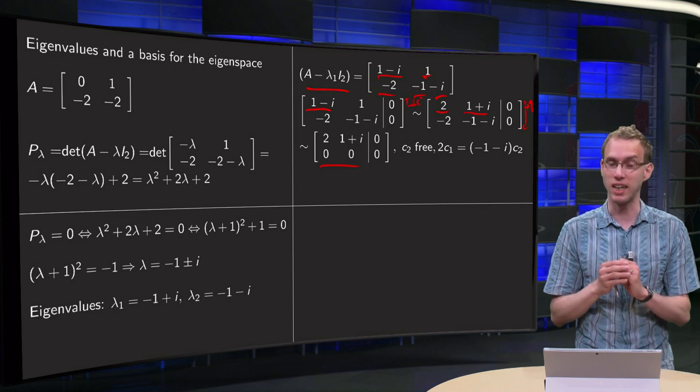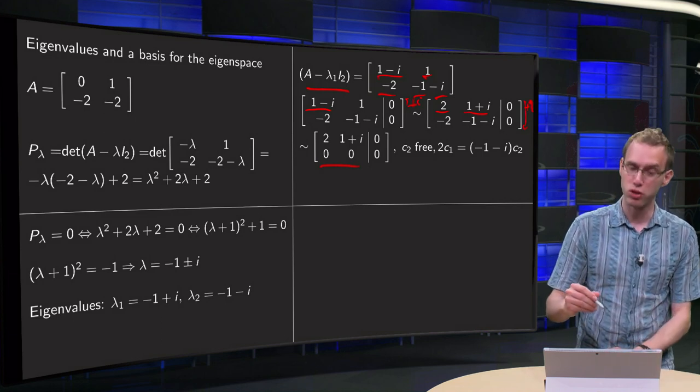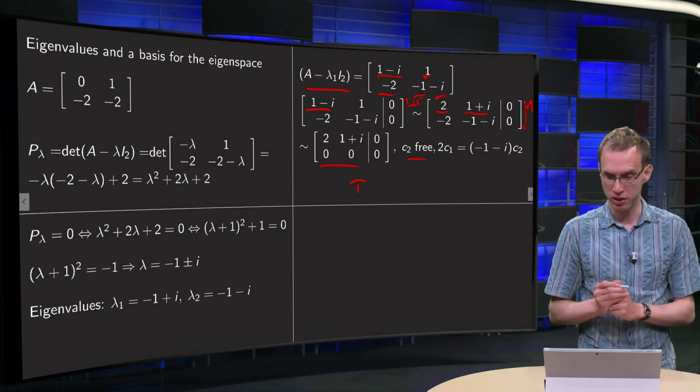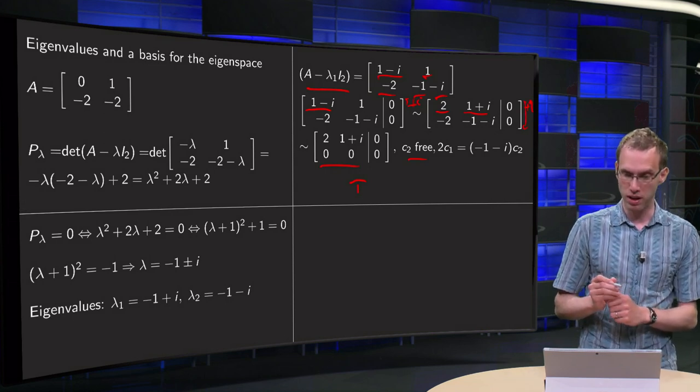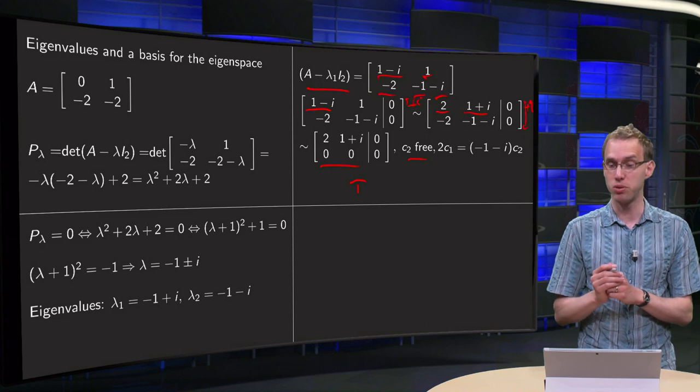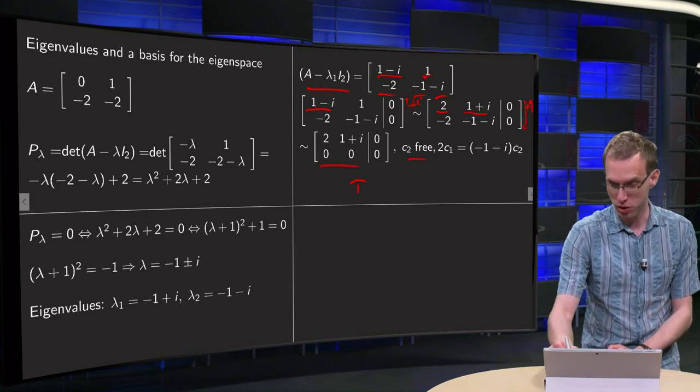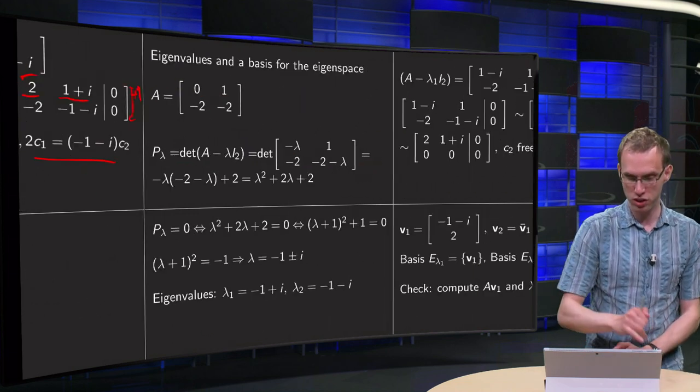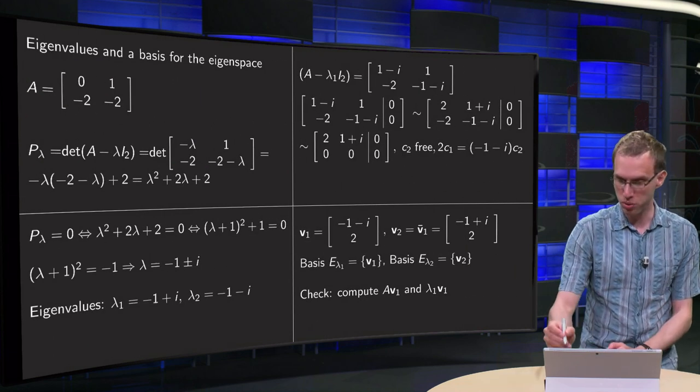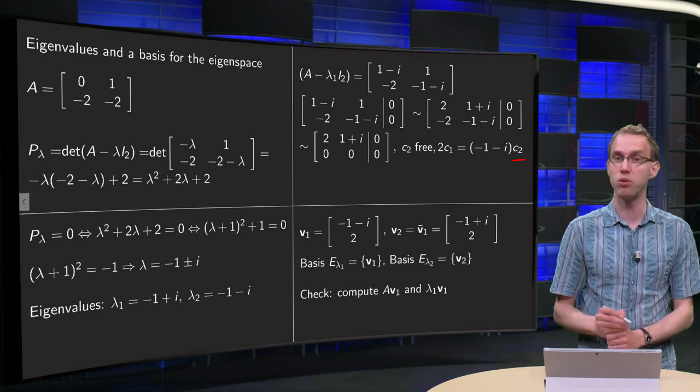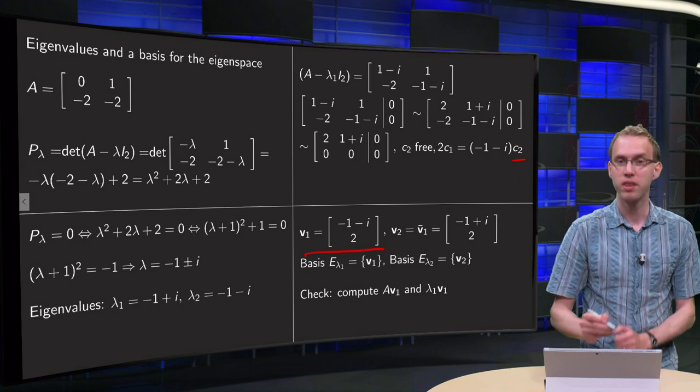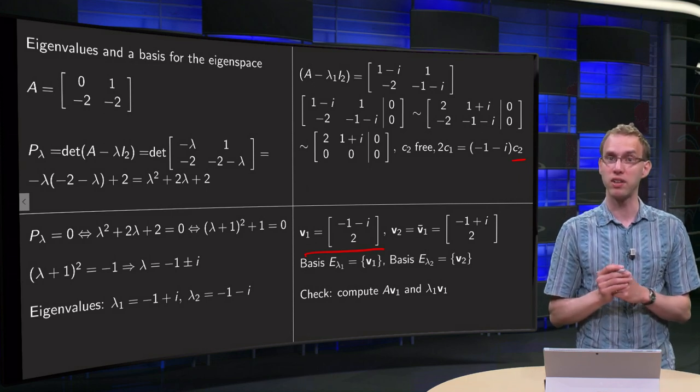Then we can continue with solving the system. The first equation yields 2c1 plus 1 plus i times c2 equals 0, or 2c1 equals minus 1 minus i times c2. So let's take a convenient c2, for example if we take c2 equals 2, then we get 2 over here, and c1 equals minus 1 minus i. So there we have our first eigenvector.